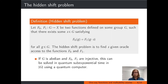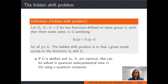The hidden shift problem is the following: F0 and F1 are functions from the same group G to some codomain X, such that there exists some group element S in G where F0 evaluated at any group element equals F1 evaluated at that same group element times S (in multiplicative notation). The problem is to find the shift S given oracular access to both functions. If G is abelian and F0 and F1 are injective, this can be solved in quantum sub-exponential time using a quantum computer — a result due to Kuperberg.